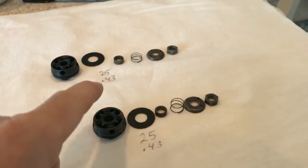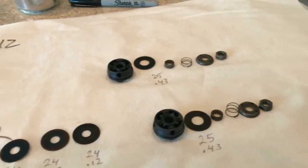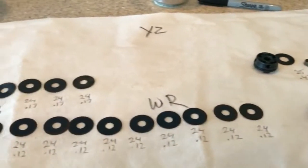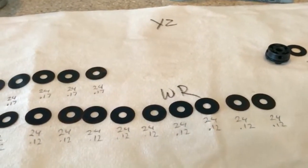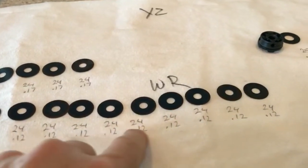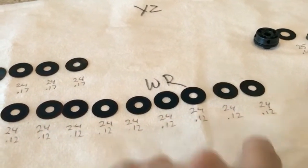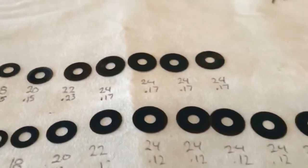What surprised me was the WR has six more 24 millimeter shims than the YZ, but the YZ's are thicker. The WR's are 0.12 millimeter and the YZ's are 0.17.